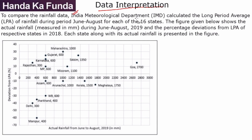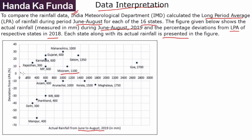To compare rainfall data, the Indian Meteorological Department calculated the long period average (LPA) of the rainfall during June to August for each of the 16 states. The figure below shows the actual rainfall measured during June to August 2019 and the percentage deviations from the LPA of the respective states in 2018. Each state along with its actual rainfall is presented in the figure. For example, Mizoram in the June to August 2019 period saw a rainfall of 1100 mm, which was 10% higher than its long term period average — so its LPA would have been 1000 mm.